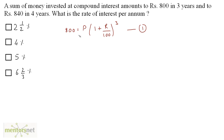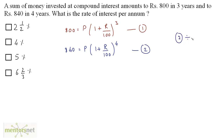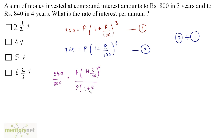The same principal when invested for 4 years gives 840 as the amount. So 840 equals P into 1 plus r upon 100, raised to 4. This is equation 2. Now dividing equation 2 by equation 1, on the left hand side we have 840 upon 800 equals P into 1 plus r upon 100 raised to 4, divided by P into 1 plus r upon 100 raised to 3. The P's cancel out, and 1 plus r upon 100 raised to 3 cancels, leaving only 1 plus r upon 100 raised to 1.